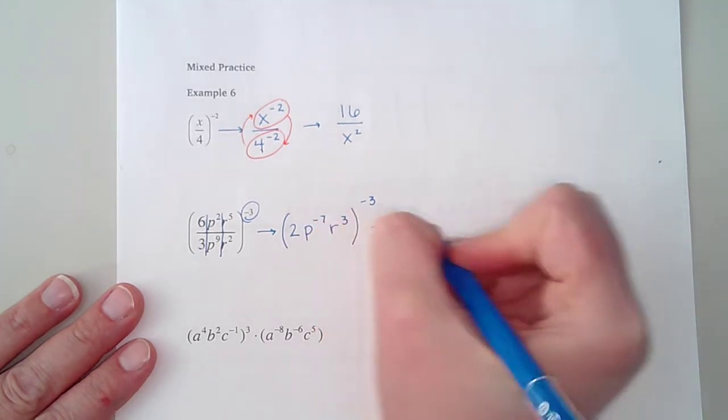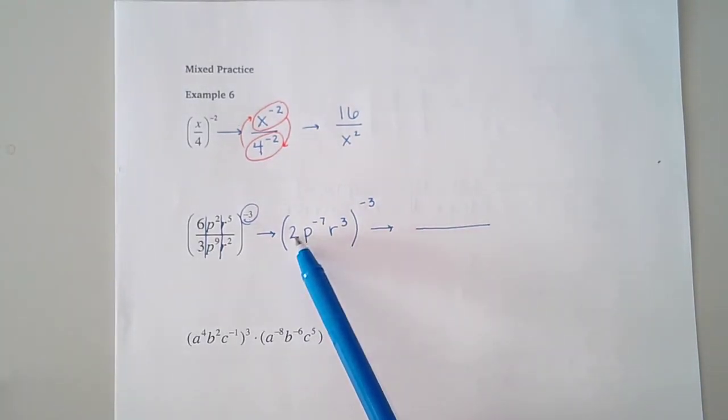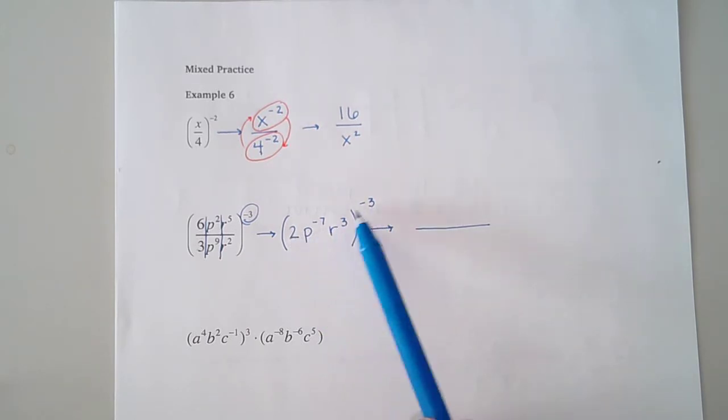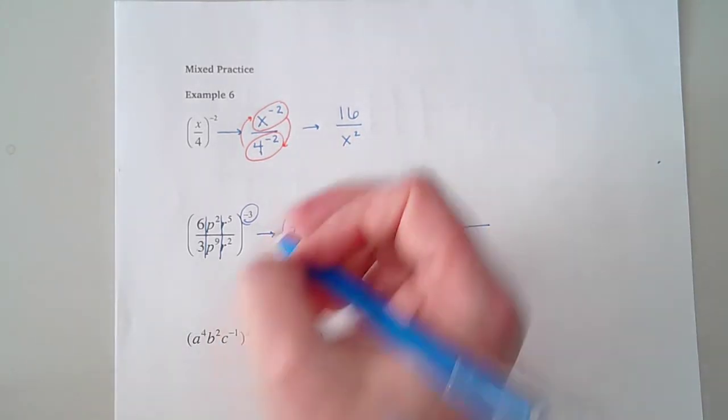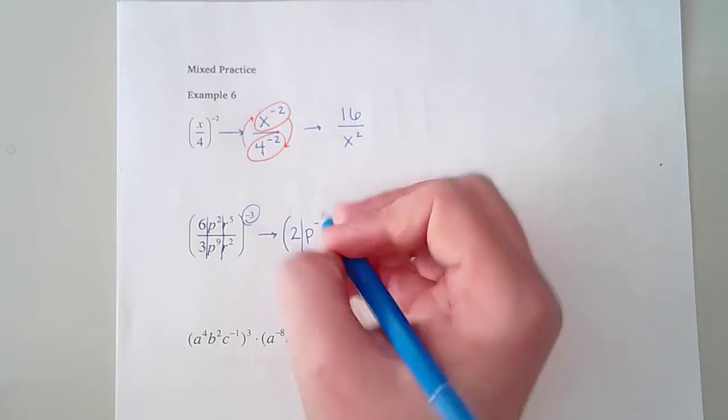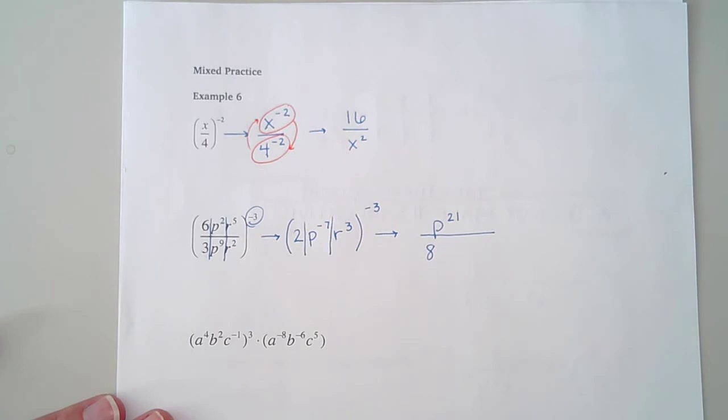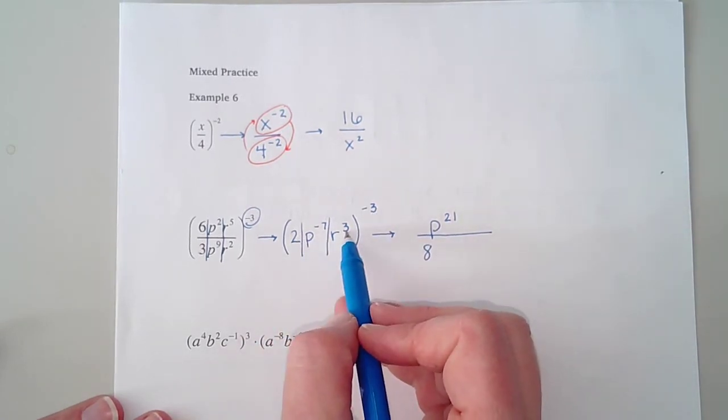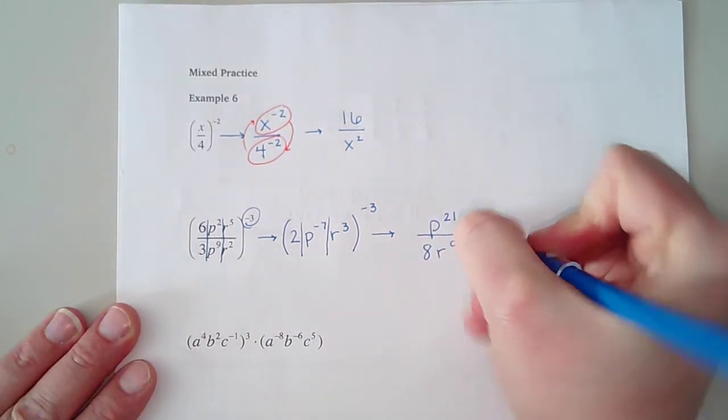So now I'm going to set up a fraction bar here so that as I do this next round, I can place things correctly. 2 to the negative third power really means I'm doing 2 to the third power. Remember, I'm not multiplying there, I'm using a power. 2 to the third power is 8. The fact that that's negative means that 8 is going on the bottom of my fraction. Now let's do the p. Here I'm raising a power to a power, so that's multiplication. Negative 7 times negative 3 gives me positive 21. Because that came out positive, I'm putting it up on the top of the fraction. Then 3 times negative 3 makes negative 9. So r to the negative 9th power means that r is going to go on the bottom of the fraction. When I put it on the bottom, it's no longer negative. The negative is just there to be a traffic director. And that's where you would leave your final answer.